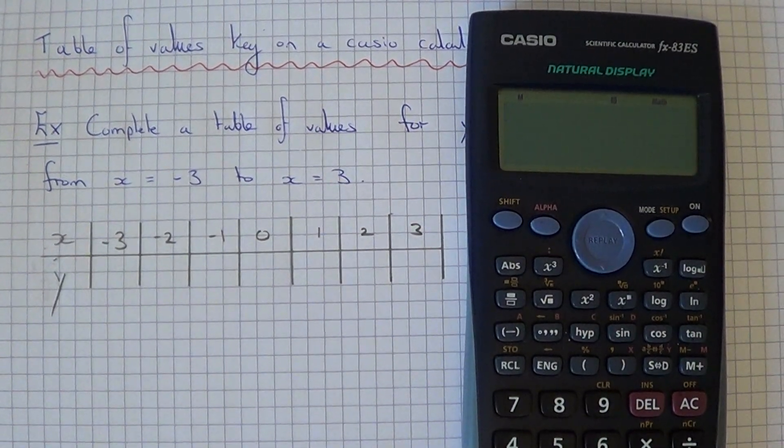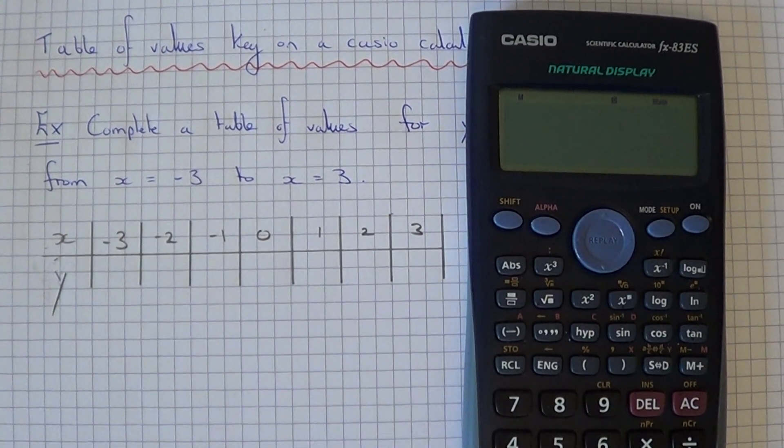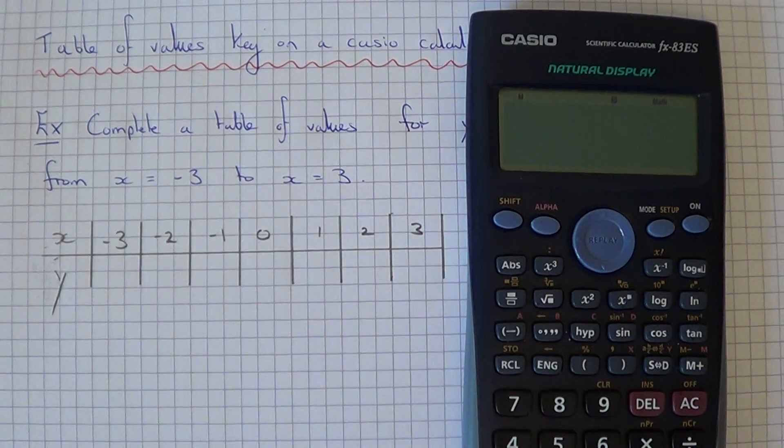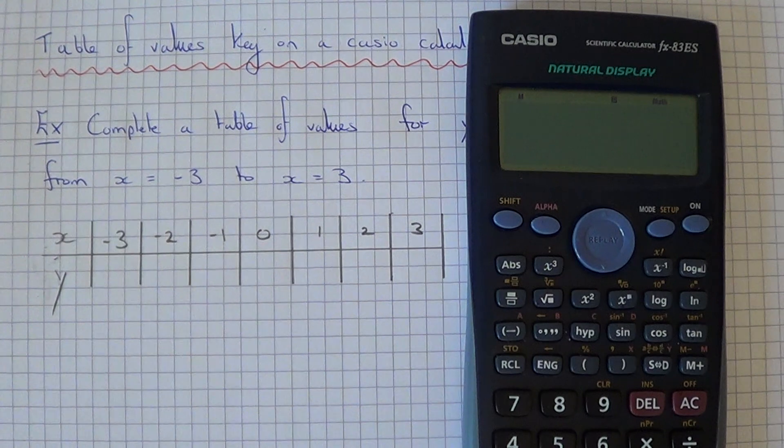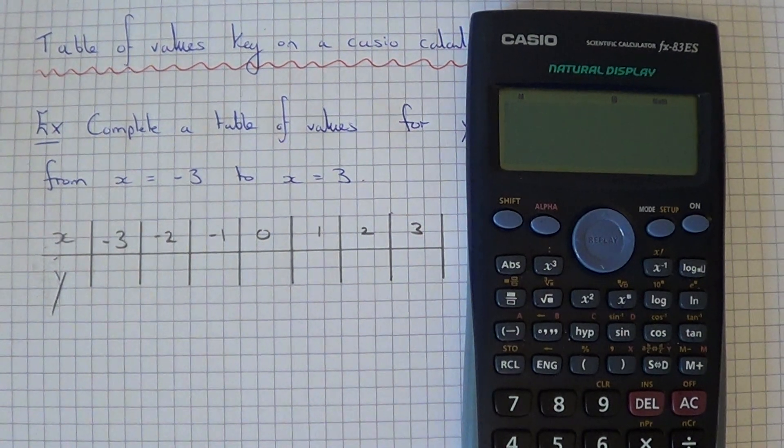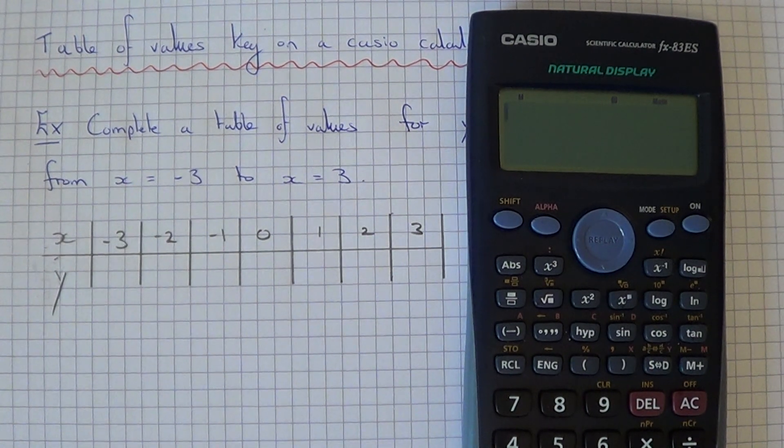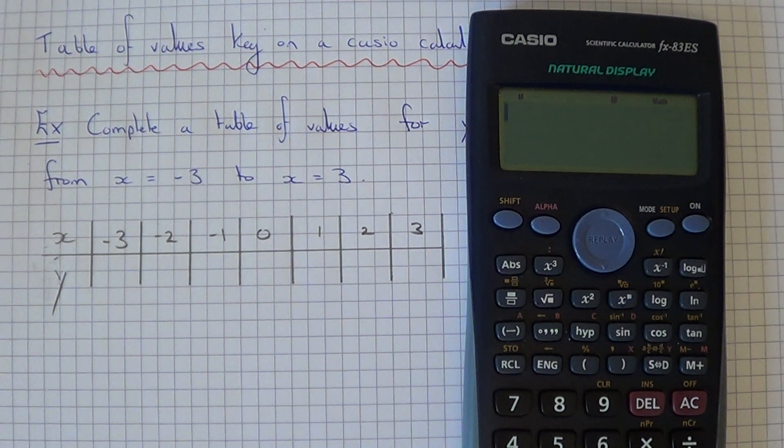Hi, today I'm going to show you how to draw up a table of values using a Casio scientific calculator. This is a great little cheat which will save you loads of time in exams and it will make sure you get the right coordinate points to plot on your graph.